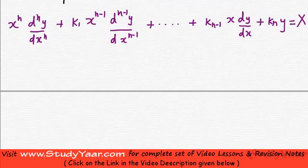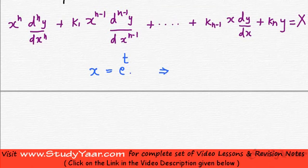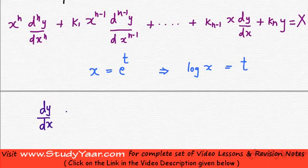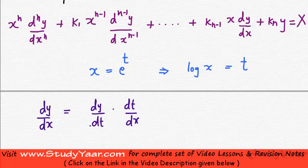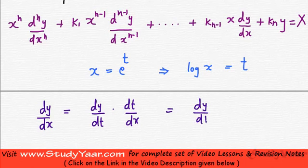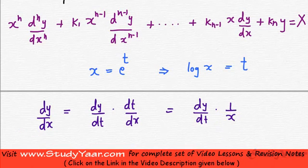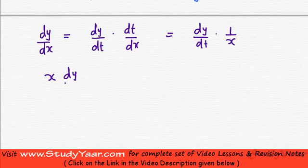Let's make a substitution x equal to e raised to power t. If this is the case, then taking log of both sides, what we have is log of x equal to t. Now let's see what is dy by dx. dy by dx is going to be equal to dy by dt times 1 upon x. So if you take x over to the left side, what you get is x dy by dx equal to dy by dt.